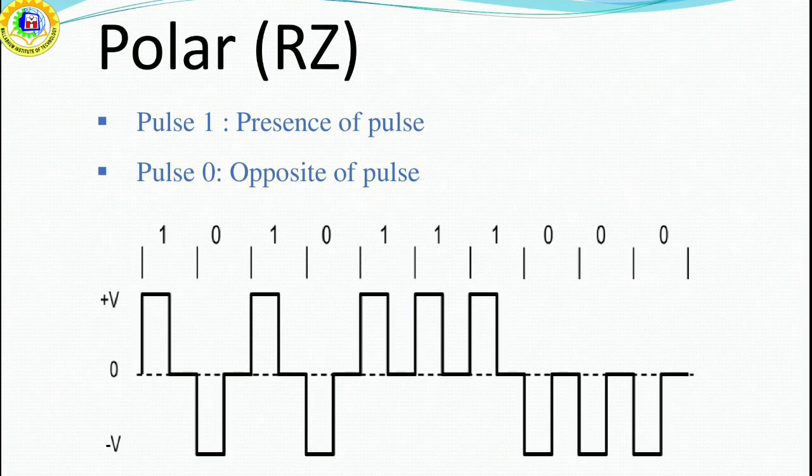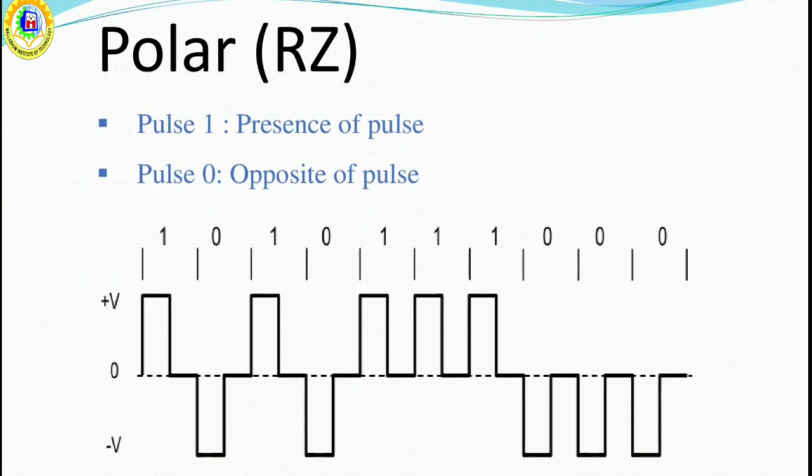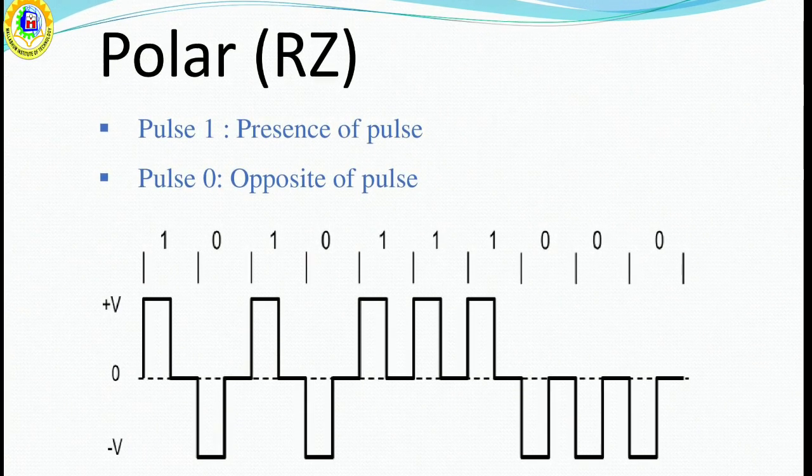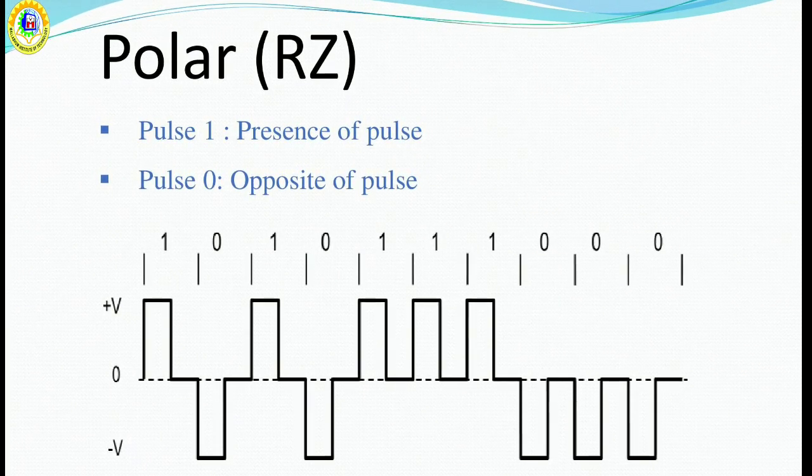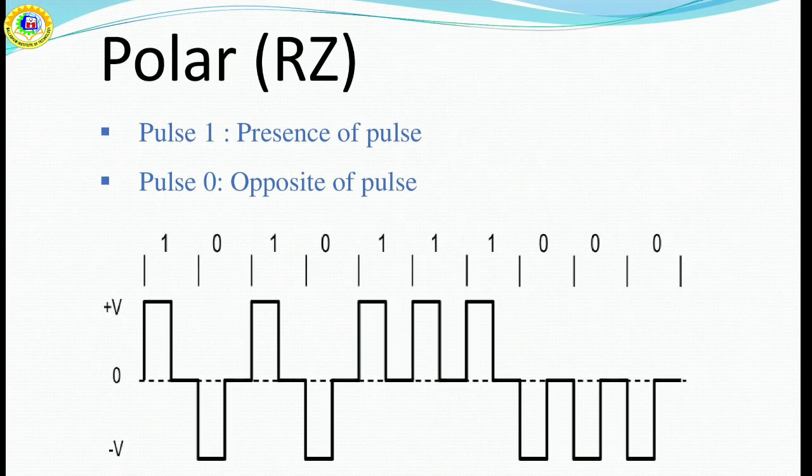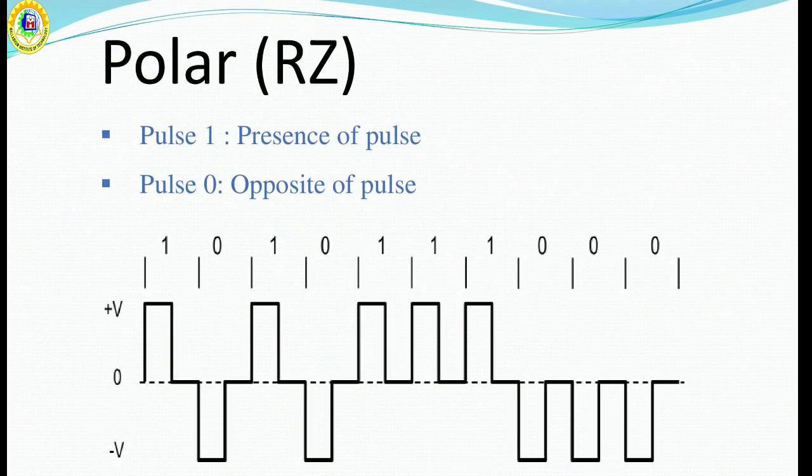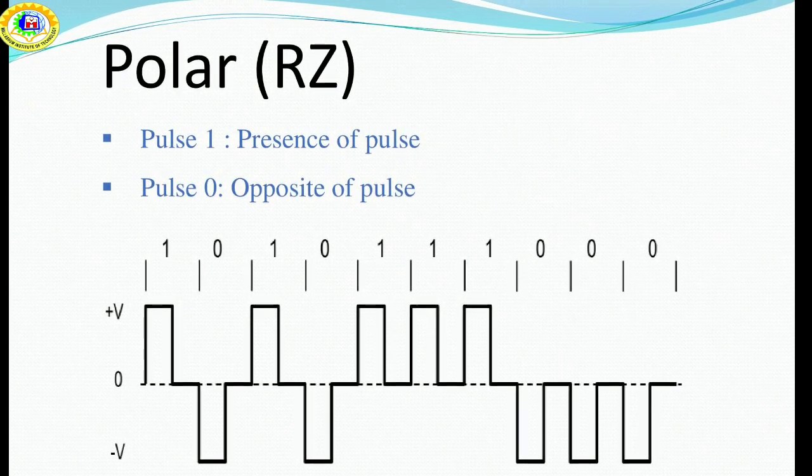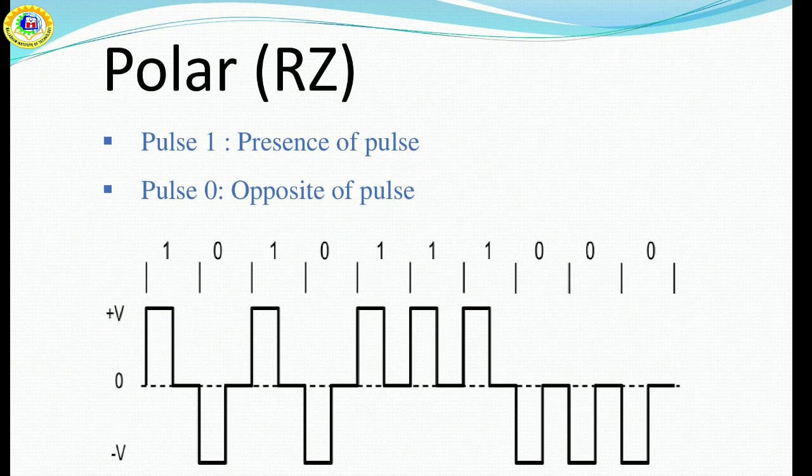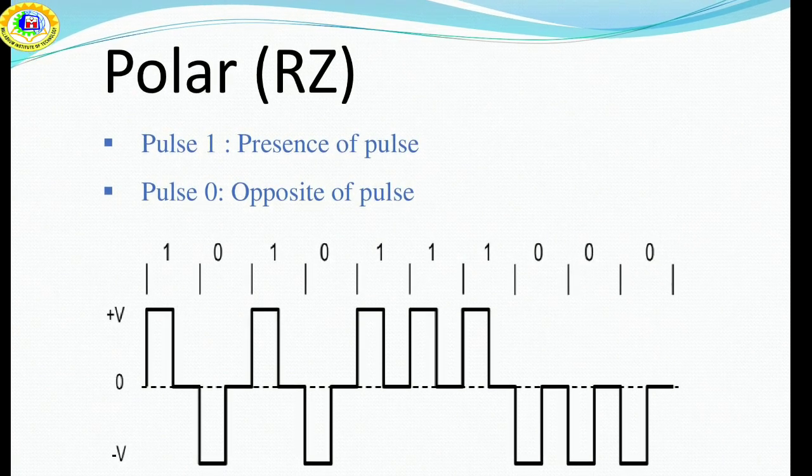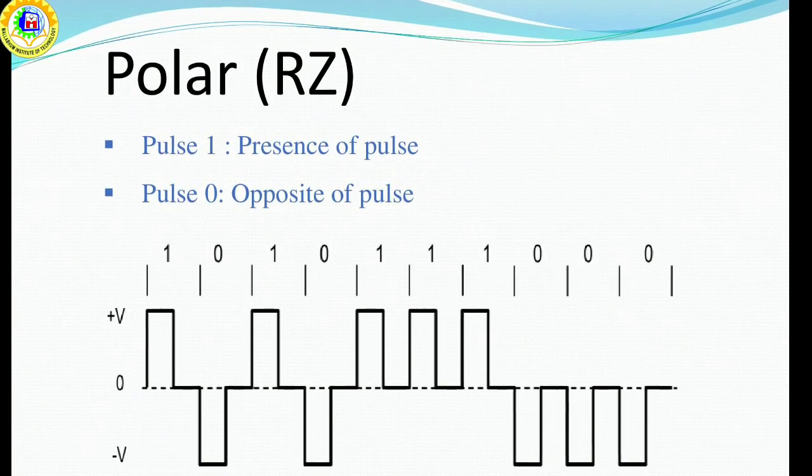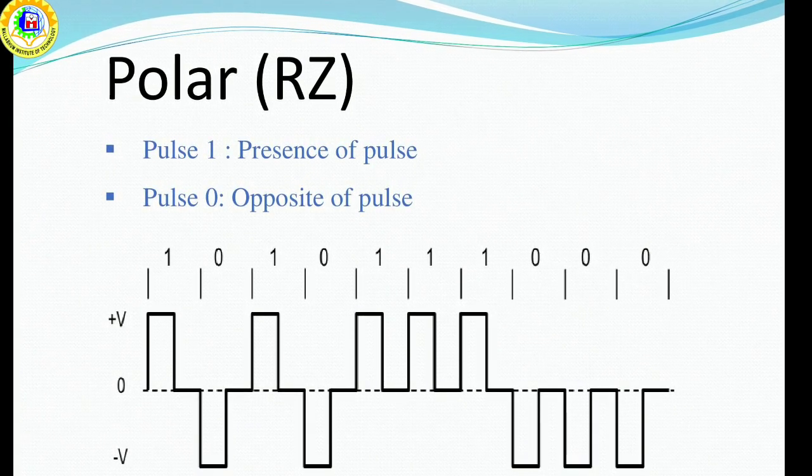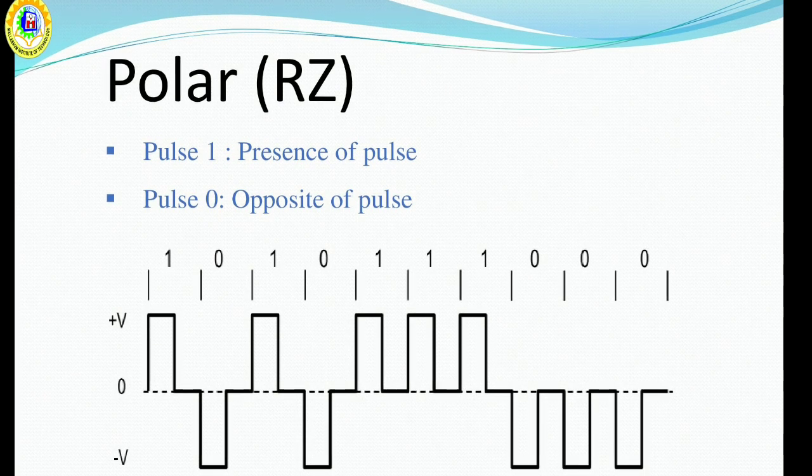Polar return to zero. In this signaling, a high in data is represented by a mark pulse with duration T, which is less than the symbol bit duration. Half of the bit duration remains high, but it immediately returns to zero and shows the absence of pulse during the remaining half. For a low input, a negative pulse represents the data, and the zero level remains same for the other half of the bit duration.